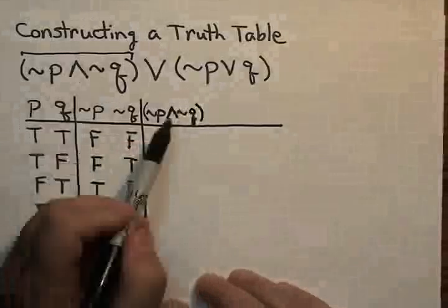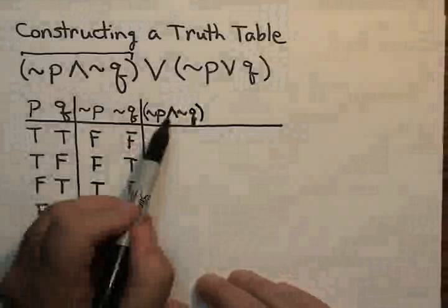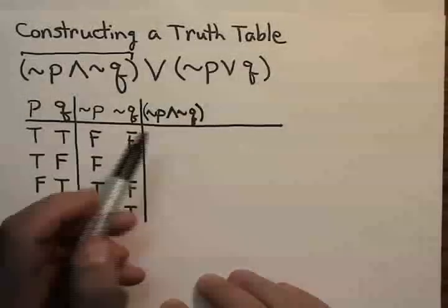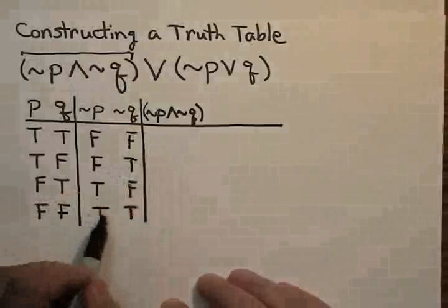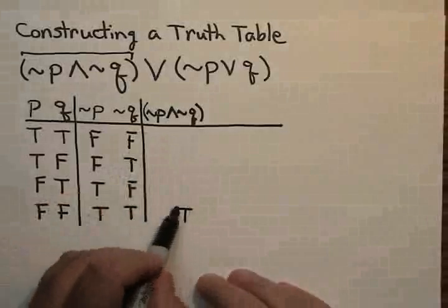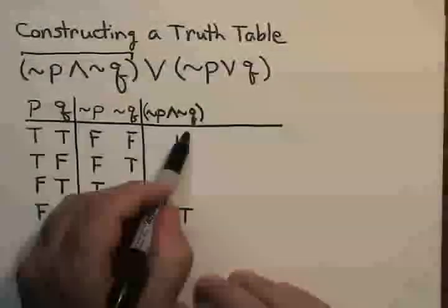Now, recall that a conjunction is only true if both component statements are true. In other words, a conjunction is only going to be true if both pieces are true. So it won't be true here, and it will be false elsewhere.